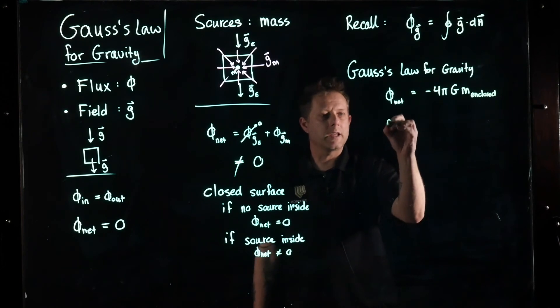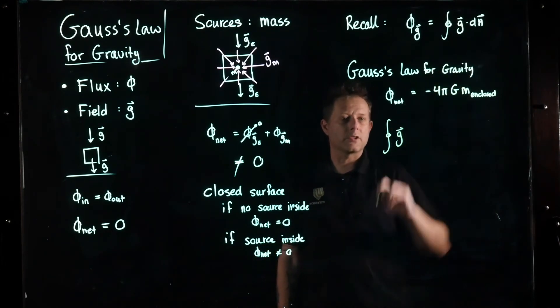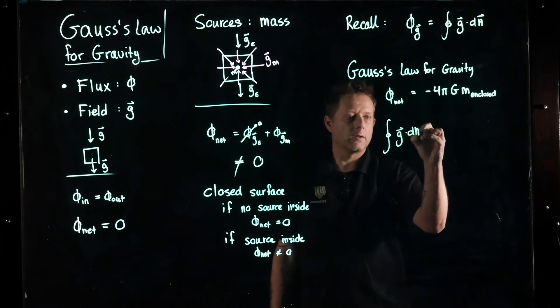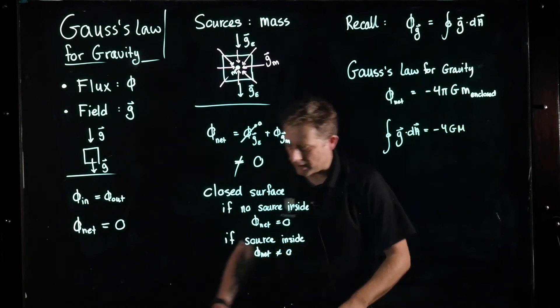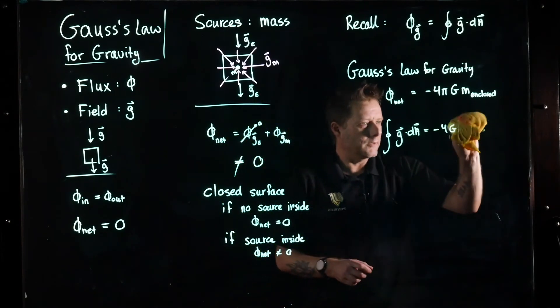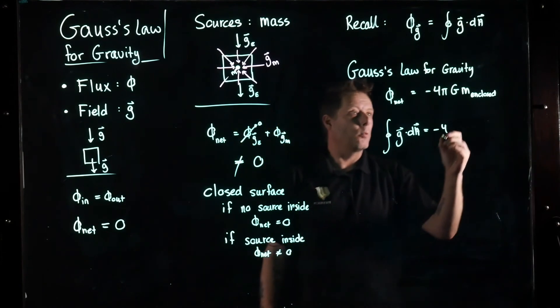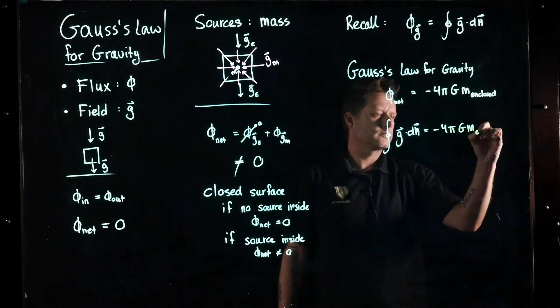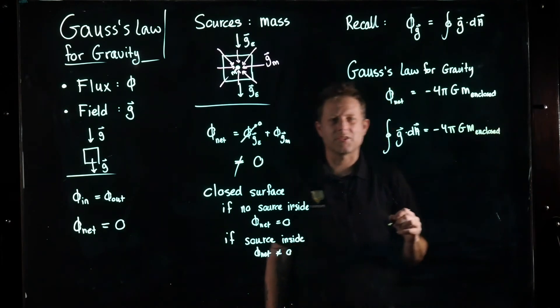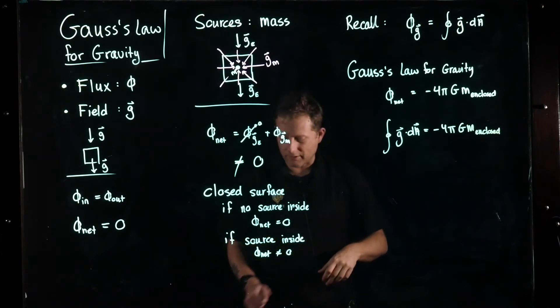So with that in mind, we get a relationship where we take flux and express it in terms of the field. So this is Gauss's Law for gravity. I'm going to put a box around it.